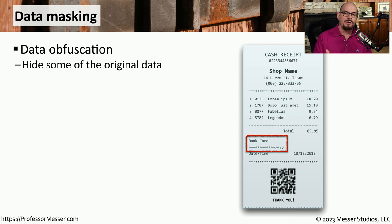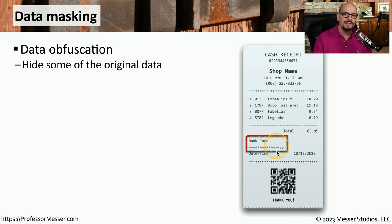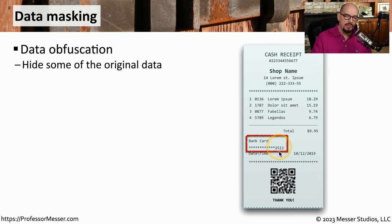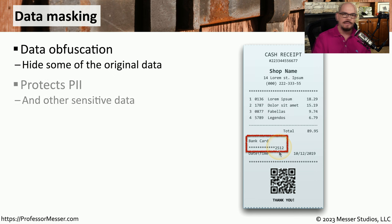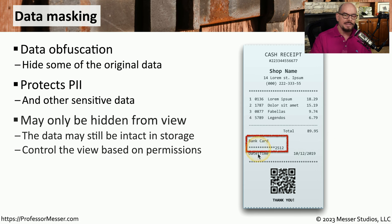When you get the receipt for your payment, you may notice there's additional obfuscation used on the receipt itself. If you look at the credit card number on your receipt, you'll usually see a string of asterisks and usually the last four digits of the credit card. This is called data masking, where we are hiding parts of the original number and only showing a portion of it on the receipt. This prevents someone from gaining access to your receipts and using those credit card numbers to make their own payments. Obviously the entire credit card number is known by your credit card company, but for the purposes of printing a receipt, only a portion of that number is shown.